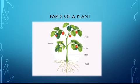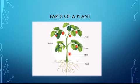A plant has four basic parts. The first one is roots, which are underground. The second part is stem, which is straight and on the ground. The third one is leaf, which is green in color. The fourth one is flower. When the flower changes into fruit, this becomes the fifth part of a plant.